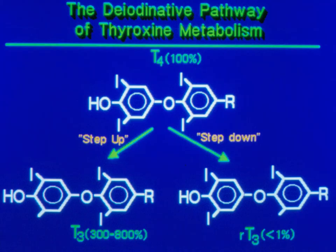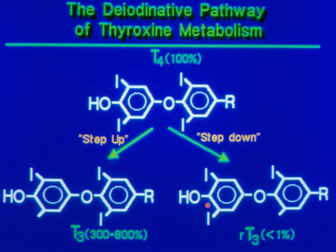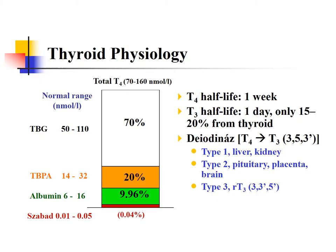When we have this deiodinase enzyme in the periphery, there are two possible processes. First, there is step-up deiodination, where we remove the iodine from the outer ring of thyroxine, making a more potent T3 — about 500 times more potent than T4. Alternatively, we can have reverse T3, which is completely ineffective — less than one percent of the original effect of T4. This deiodinase is located in different organs, providing another way to regulate thyroid function.